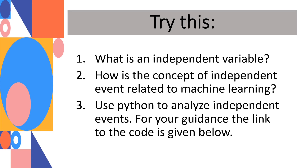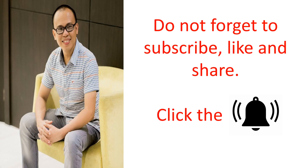Let's evaluate ourselves on how far we've learned. Question 1: What is an independent event? Question 2: How is the concept of independent events related to machine learning? Question 3: Use Python to analyze independent events. The link to the code is given below — try to play around with it and have fun. Write your answers in the comments below. Don't forget to subscribe, like, and share, and click the bell icon to be notified every time we have a new session. See you in the next lesson.